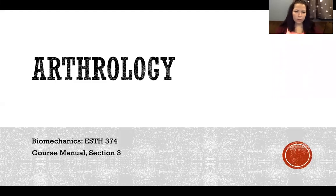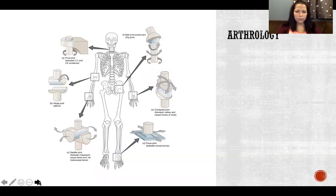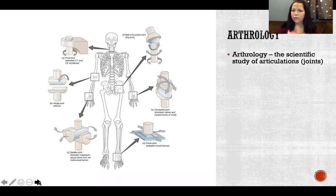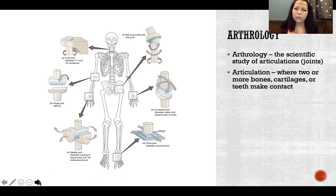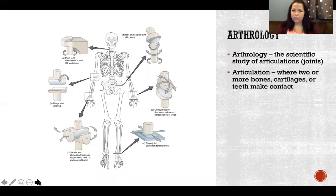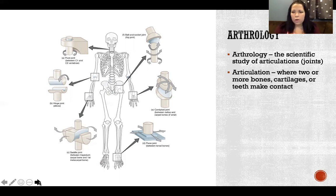In this video we're going to talk about arthrology, the study of joints. Arthrology is the scientific study of articulations — 'arthro' means joints or articulations, which is just another fancy word for joints. An articulation is where two or more bones, cartilages, or teeth make contact, again synonymous with joints. Teeth are not actually bones but where they articulate with the mandible and maxilla are still articulations.